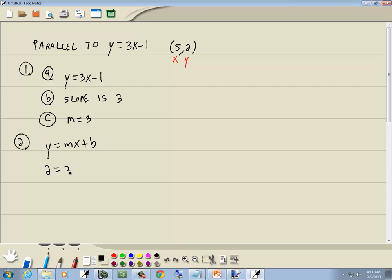Now m from step 1 we said was 3, and x was 5, plus b. And then we want to solve for b. So we've got 3 times 5, which is 15. Take 15 on the left side, becomes a negative 15. And we get b equals negative 13.